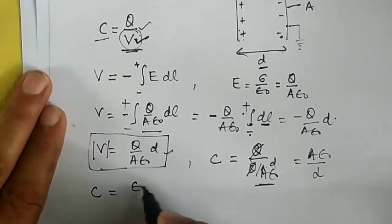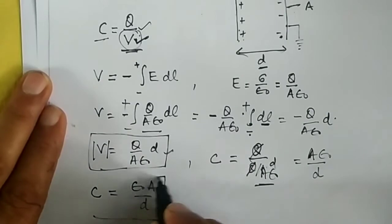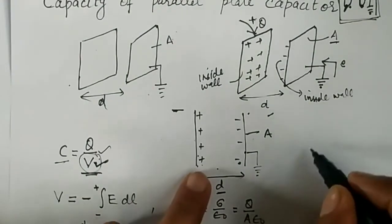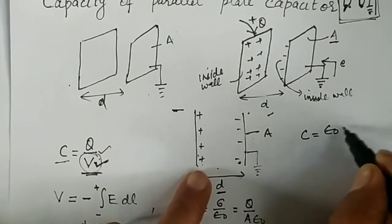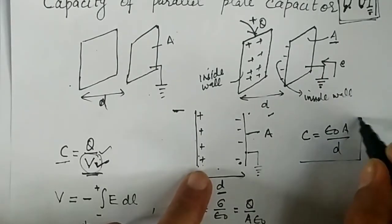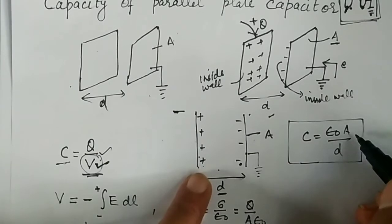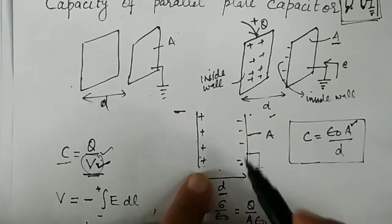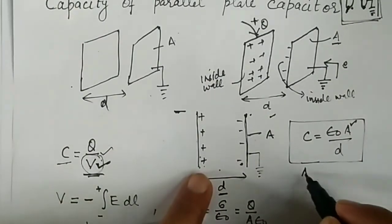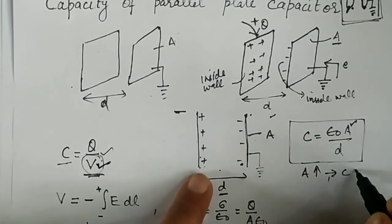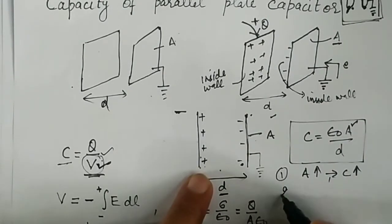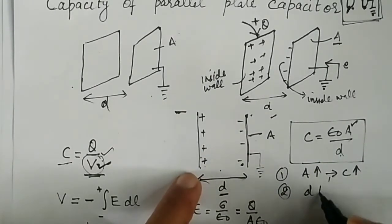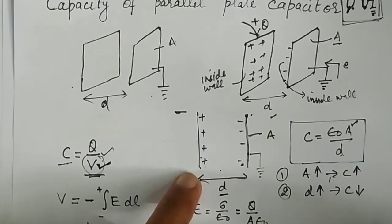The capacitance of a parallel plate capacitor depends upon three factors. Remember this formula: C equals epsilon naught A divided by D. First, capacitance depends on the area of cross-section A — if A is larger, the capacitance is greater. Second, it depends on the distance D between the plates — if D increases, the capacitance decreases because it is inversely proportional to D.